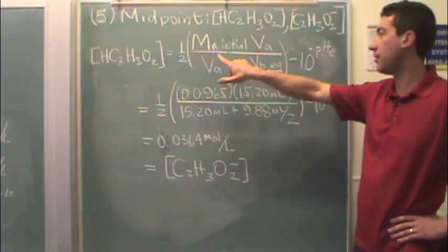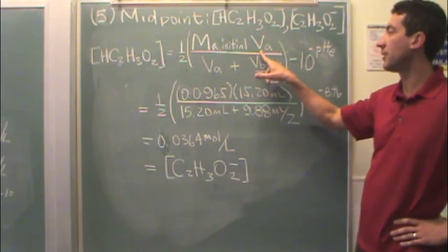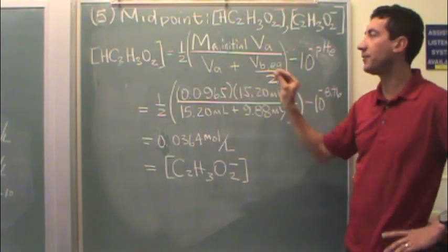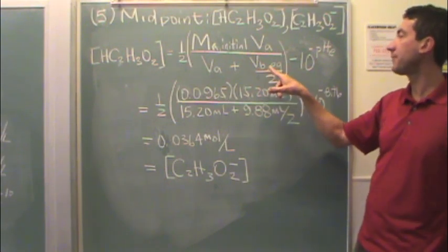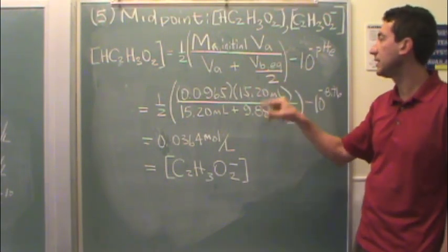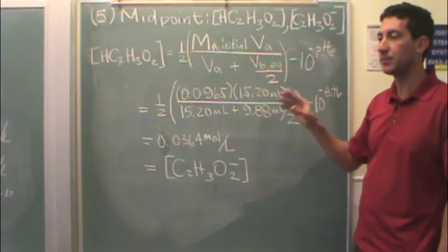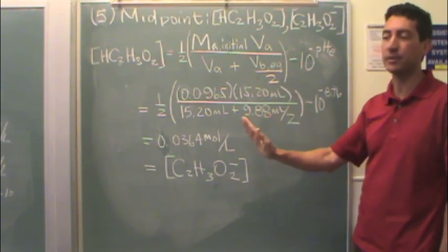It's the initial molarity of the acid times its volume, divided by the volume it takes to get to the midpoint, which is the initial volume plus half the base volume added to get to the pulvin's point, because halfway to the pulvin's point is where you find the midpoint.